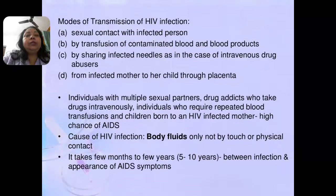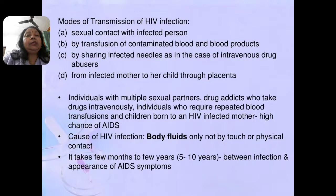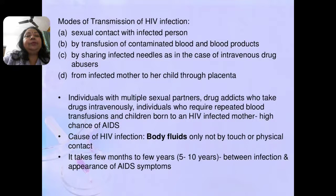The modes of transmission of HIV infection are: number one, sexual contact with an infected person — if a person is infected with HIV, they can transmit the virus through sexual contact with a healthy person. Number two, transfusion of contaminated blood and blood products like platelets and plasma. Number three, sharing infected needles, as in the case of intravenous drug abusers. Number four, from an infected mother to her child through the placenta, since this virus can cross the placenta and create disease in the fetus.